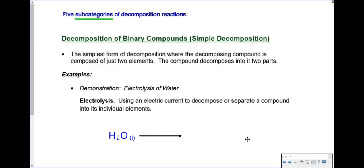Now we know chemical reactions are put into five main categories, and decomposition is one of those main categories. But we also have subcategories for some of the reaction types, and decomposition has five subcategories. The first subcategory is decomposition of binary compounds, or what I like to refer to as simple decomposition, because this is about as plain and simple as decomposition gets.